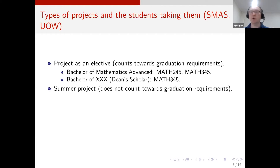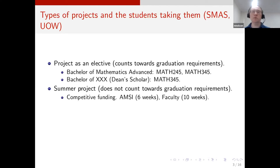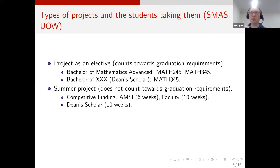Students can also do projects over the summer — we're at the end of summer session in Australia. These summer projects don't count towards graduation requirements, and students need to obtain competitive funding. They can get funding from the Australian Mathematical Sciences Institute, which is competitive across all of Australia, or from my faculty. If students get the AMSI funding — which is only for six weeks — the faculty will top it up to a 10-week project. Dean Scholar students are guaranteed funding if they want to do a summer project, so they can do two projects: one counting toward their degree and one that doesn't.